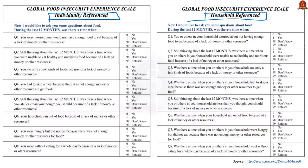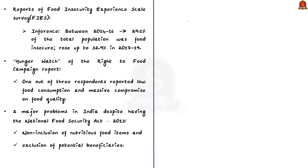Though the FIES survey is not allowed to be conducted in India by the government, the authors through technical calculations inferred the extent of food insecurity in India. Between 2014 to 2016, about 20% of the total population was food insecure, and this number rose to close to 33% in 2017 to 2019. Also, the Hunger Watch by the Right to Food Campaign presents a very grim situation, with close to one out of every three respondents reporting low food consumption and massive compromise on food quality.